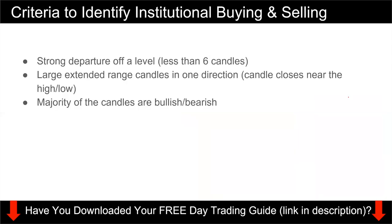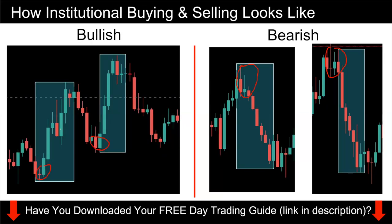The second criteria is that you have a large extended range candle in one direction. What I mean by that is the candle closes near the high or low. Going back to this example, you can see that a lot of the candles are closing near the high. If you see a lot of candles closing near the high or low, that's a very good sign that this is institutional buying or selling.